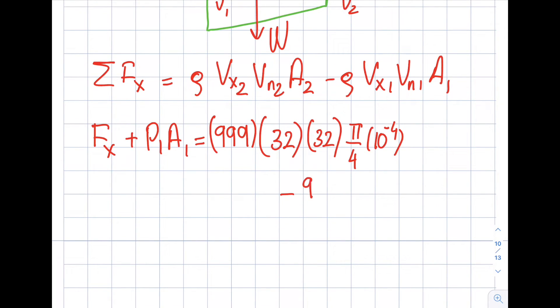But let's go down here. I don't think I would be able to fit. 999, Vx1 was 2, same logic, Vn1 is 2 as well. And this time around I'm going to have pi over 4, it's going to be 4 times 10 to the minus 2 square. So that's going to be 16 times 10 to the minus 4. And in here, let's be careful.